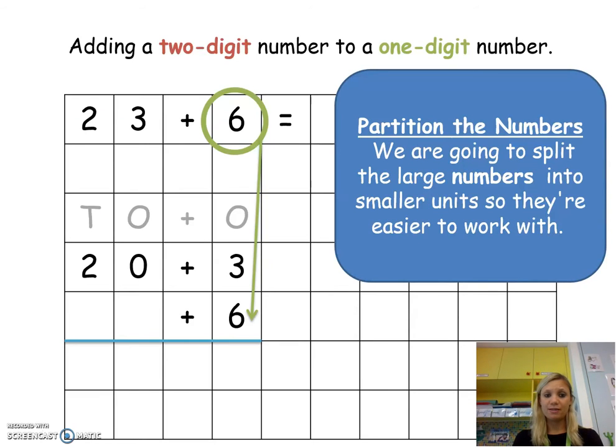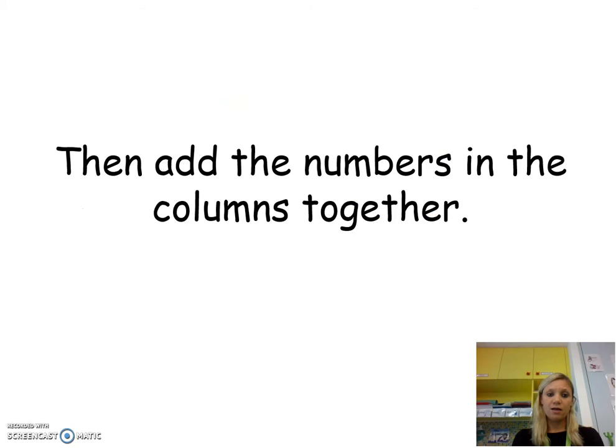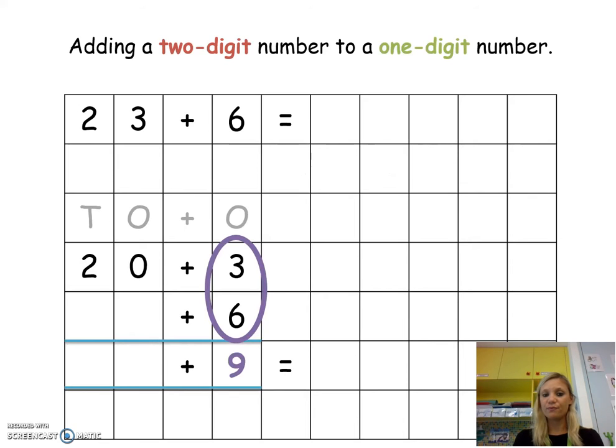Then we're going to add the numbers in the columns. Let's take a look at this. In the ones column we've got 3 add 6 equals 9 and we're going to record it at the bottom. We then look at the next column which is 20 and there's nothing else to add it to, so it's going to be 20 add 0 or nothing, which is just 20.